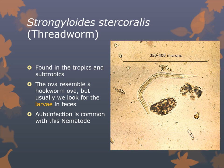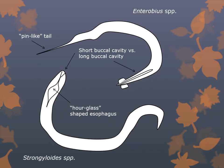Comparing Enterobius to Strongyloides adults: Enterobius vermicularis, the pinworm, has a pin-like tail, a long buccal cavity, and paraoral wings by the mouth. Strongyloides has a short buccal cavity — just a short mouth — and an hourglass-shaped esophagus. You can sometimes see a genital notch on the Strongyloides worm. Key distinction: Strongyloides has no wings and a short buccal cavity, whereas the pinworm has paraoral wings and a long buccal cavity.